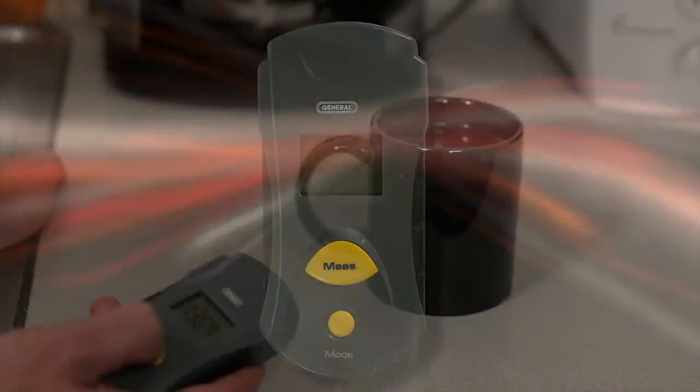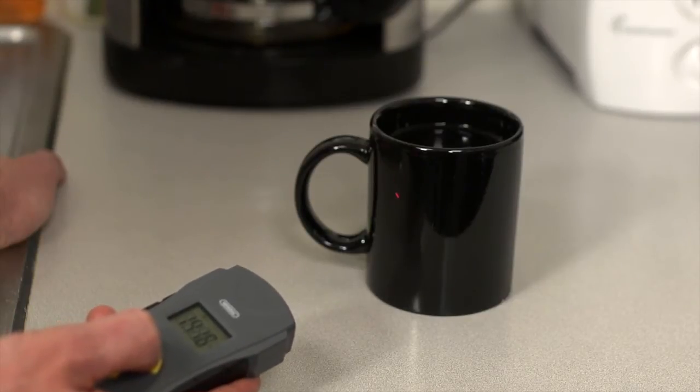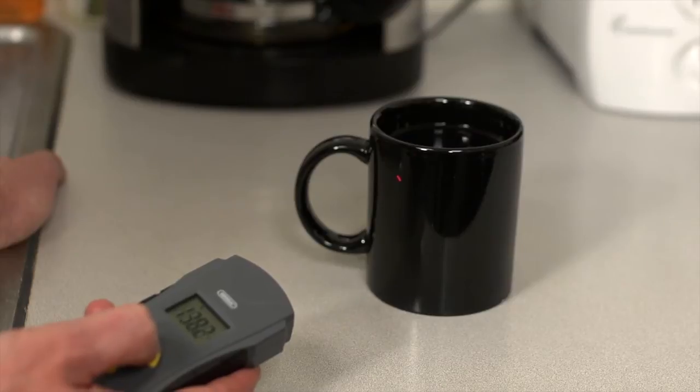First, the basics. As a demonstration, use a hot cup of coffee and a freezer. Point the unit at the cup, press and hold the measurement button. Focus your laser and be precise with your target area. Note the coffee and freezer temperatures.